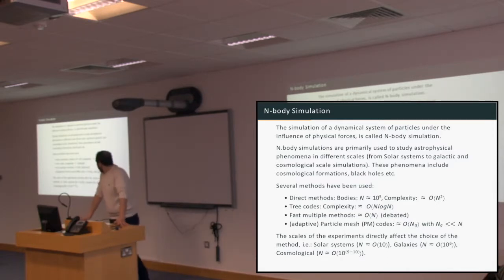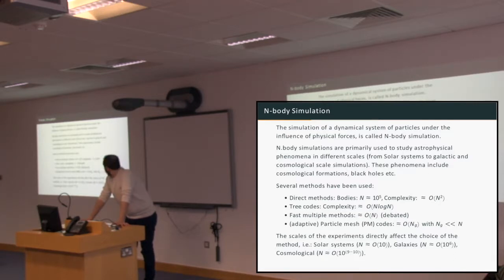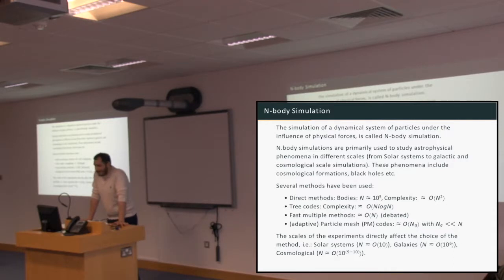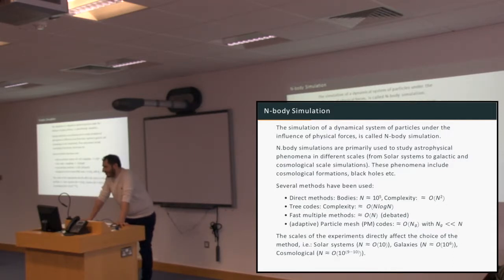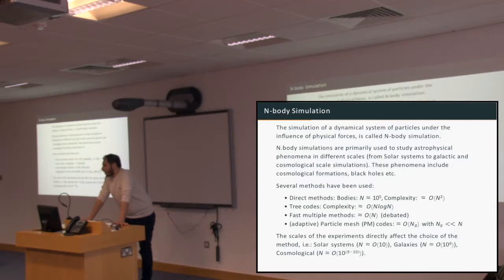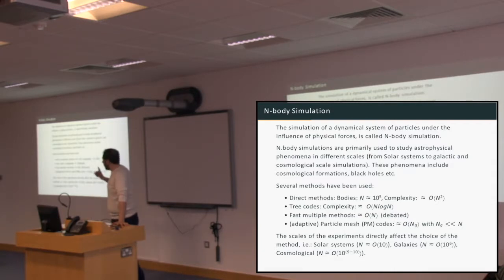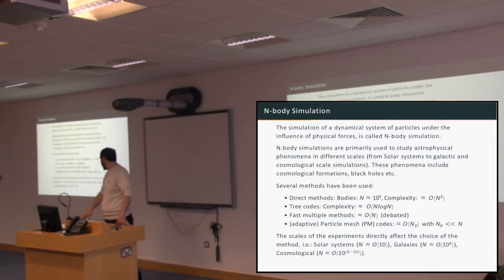Then there are the tree codes which have a complexity of N times log N. The fast multipole methods have complexity O(N), though this is debated in the literature — they say O(N) is very application-specific. Finally, there are the particle-mesh codes which are usually used for very large simulations. They do not scale with the number of bodies; they scale with the number of grid points, which is far less than the number of bodies.